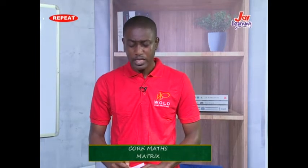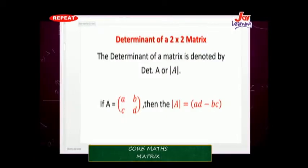Now let's come to the determinant. The determinant of a 2x2 matrix A is denoted by det(A) or |A|. If A is the matrix A, B, C, D, then the determinant is given by A times D minus B times C.